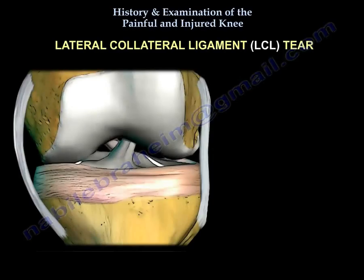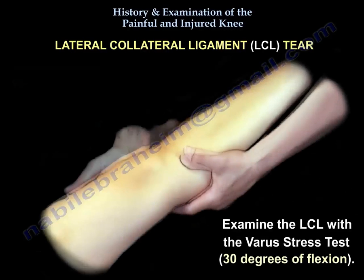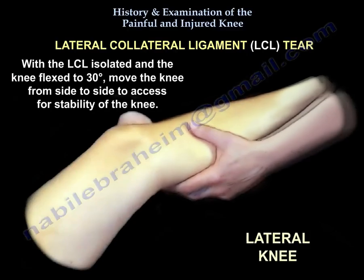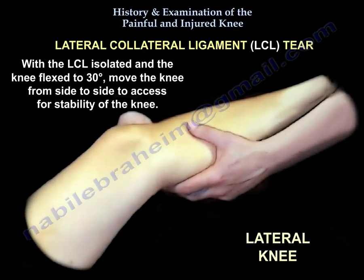Lateral collateral ligament tear: the LCL injury results from a varus force across the knee, such as a contact injury like a direct blow to the medial side of the knee, or a non-contact injury such as hyperextension stress, which may result in a varus force across the knee injuring the LCL. You can examine the LCL with a varus stress test at 30 degrees of flexion — flex the knee to 30 degrees and move the knee from side to side to assess for stability.